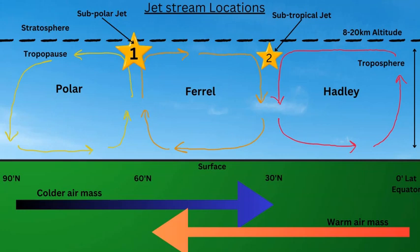This diagram is a comprehensive view of one hemisphere looking at the locations of two jet streams. You have the subpolar or polar front jet stream, marked as star number one, and number two is the subtropical jet stream. These two are in the upper troposphere between 7 to 10 kilometers above the surface, near the tropopause — the top part of the troposphere, the lowest layer of the atmosphere — which is between 8 to 20 kilometers in altitude.